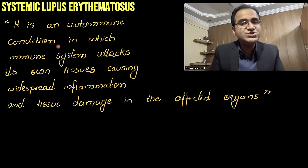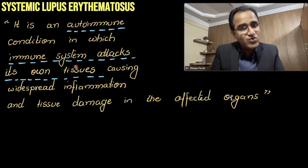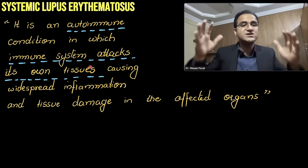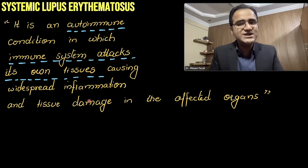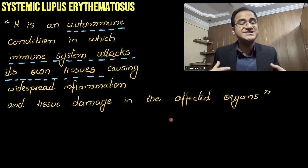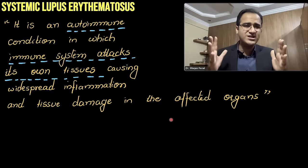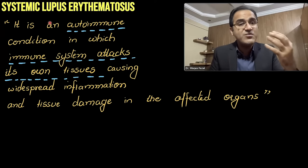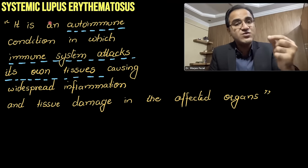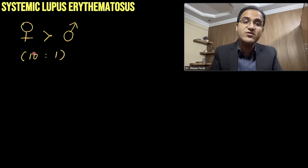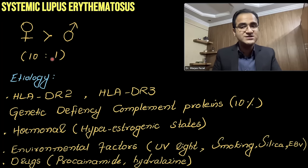SLE is an autoimmune condition in which the immune system attacks its own tissues, causing widespread inflammation and tissue damage in the affected organs. Remember, SLE is a systemic disease — it affects each and every organ in the body. The word lupus comes from 'wolf' due to the wolf-like appearance; the rashes appear as if someone has been bitten by a wolf. It affects females much more than males — the ratio is 10 times more in females compared to males.